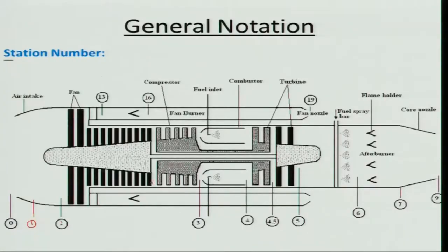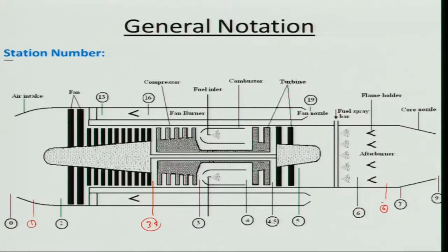Stations 2 to 3 are for the compressor, 3 to 4 is the combustor, 4 to 5 is the turbine (with 4 to 4.5 being the high-pressure turbine and 4.5 to 5 the low-pressure turbine). Station 5 to 6 includes the afterburner and jet pipe mixing section. Stations 7 to 9 represent the nozzle, with station 8 being the throat of a convergent-divergent nozzle.